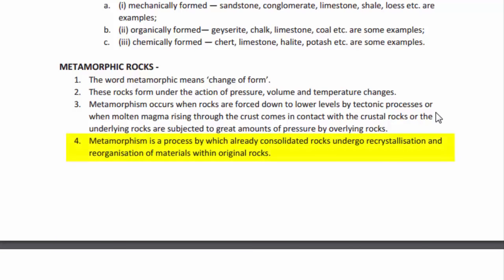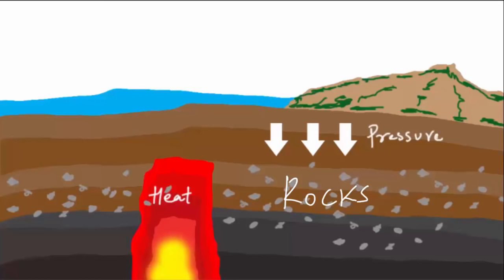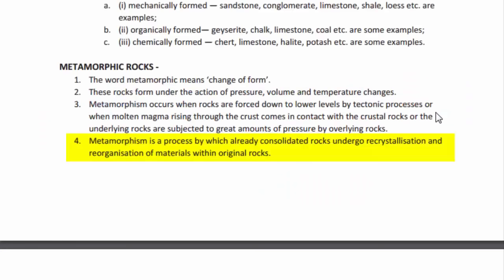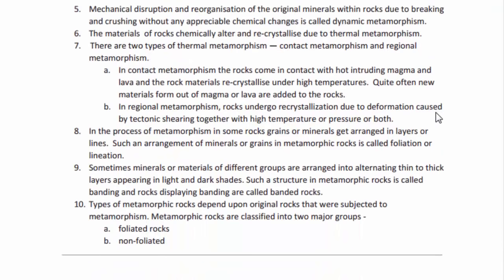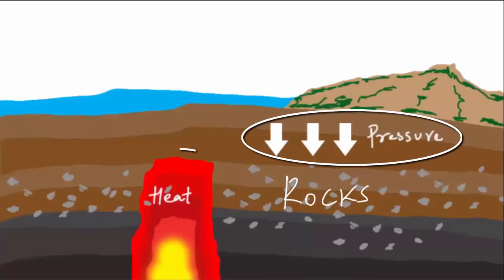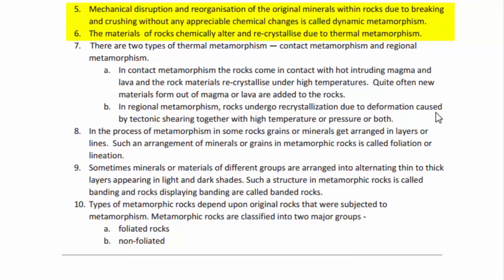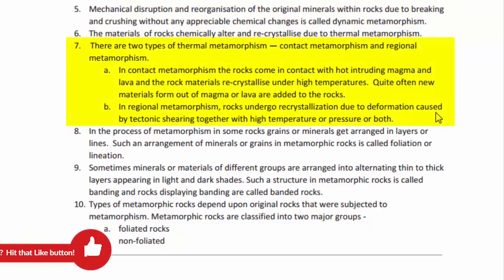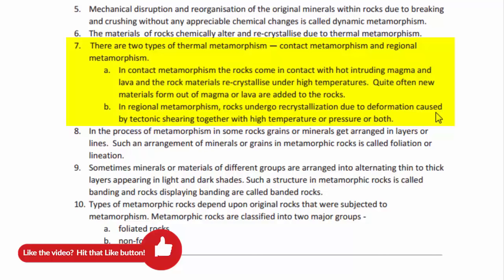Metamorphism is a process by which already consolidated rocks undergo recrystallization and reorganization of materials within the original rocks, due to extreme heat and pressure. When rocks make their way inside the mantle during subduction, heat and pressure transform them into metamorphic rocks. This transformation happens in two ways: dynamic metamorphism, caused by the pressure of the massive weight of the landform above, and thermal metamorphism, caused by heat from the interior of the earth, which produces chemical alteration in the rocks.